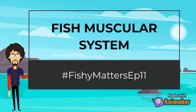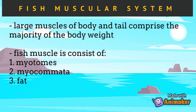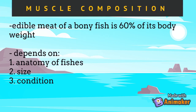Hello, I hope you are doing fine. In today's episode, the fish muscular system is our topic of discussion. In almost all fish, the large muscles of the body and tail comprise the majority of the body weight. The fish muscle consists of myotomes, myocomata, and fat, which are mostly found on the lateral portion of the body. The edible meat of a bony fish is 60% of its body weight, depending on factors such as the anatomy of the fish, its size, and its condition.